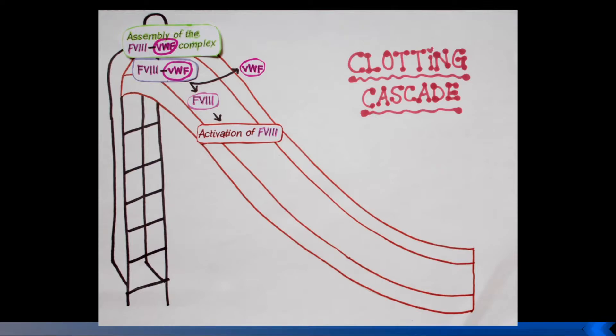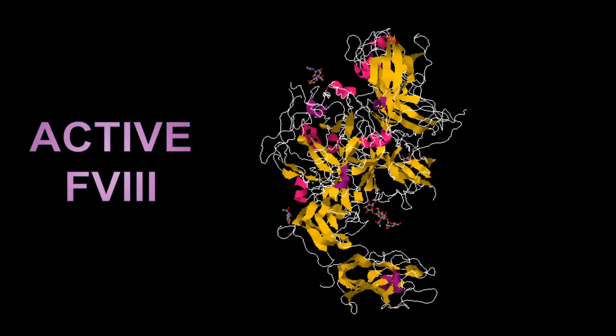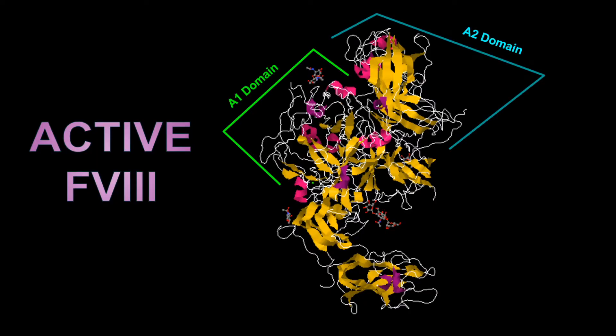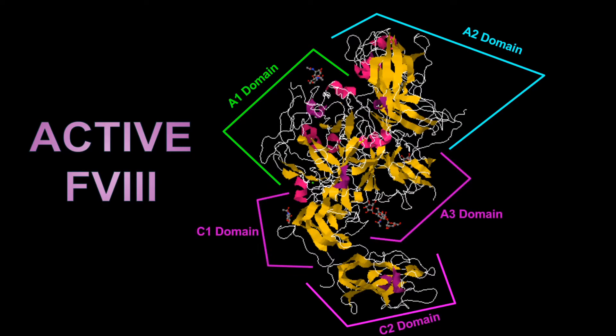Thrombin has been proposed to also interact with these sulfated acidic regions in order to activate Factor VIII. Active Factor VIII is a heterotrimer consisting of A1, A2, and A3C1C2 domains.